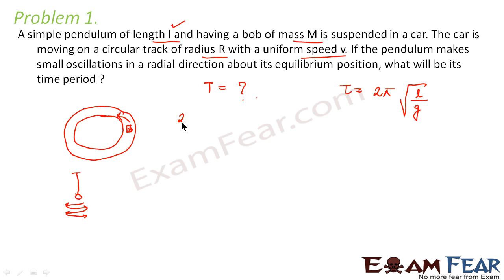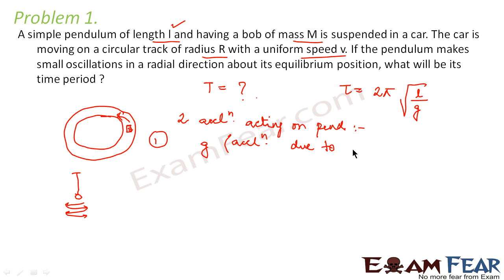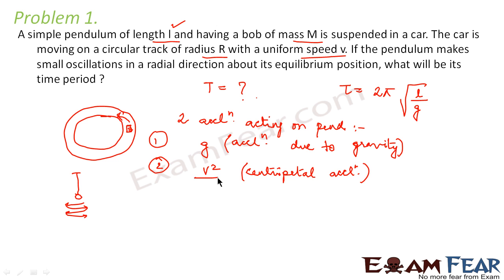Now we have to calculate the net acceleration due to gravity acting on the pendulum. Since the car is moving in a circular path, there are two accelerations acting on the pendulum. The first is the acceleration due to gravity G. The second is the centripetal acceleration, which comes into play whenever an object moves in a circular path. Centripetal acceleration is given by V²/R, where R is the radius and V is the speed of the car.